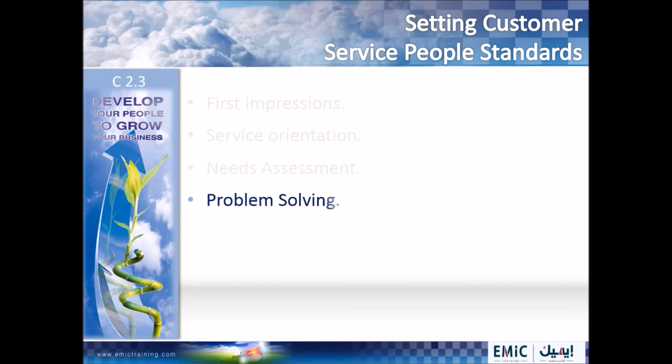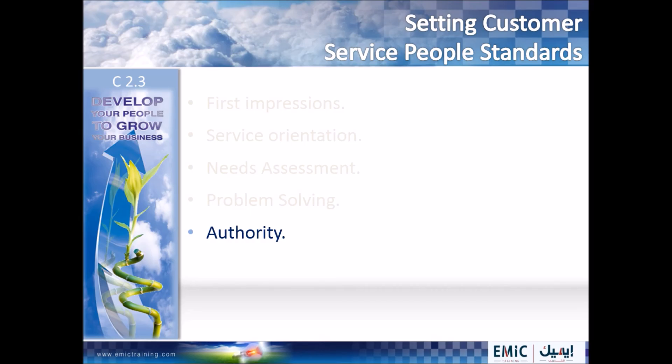Next is problem solving. These standards look at the way in which customers' problems and complaints are handled and solved, and the mechanisms used to do so. And lastly, the level of authority — this type of standard refers to the authority people have to resolve customer service issues at a front line level.